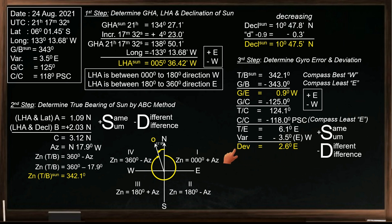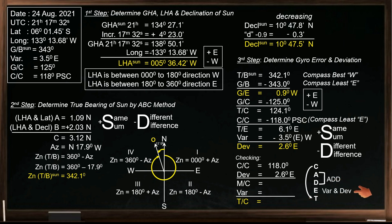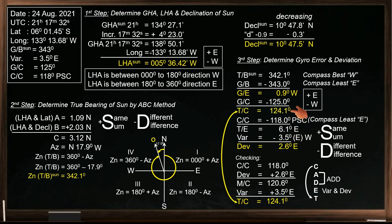Let's check what we have calculated by correcting the compass. Our compass course is 118 degrees. The deviation is 2.6 degrees east. To determine the magnetic course, we can use the rhyming rule — 'can dead men vote twice at election' — or the cadet rule: from compass to true course, add easterly variation and deviation, so westerly errors are subtracted. We add the deviation to find the magnetic course, then apply the variation of 3.5 degrees east — since east, we add it. The true course is 124.1 degrees. Checking against our earlier calculated true course, we got the same value, which means our calculations are correct.